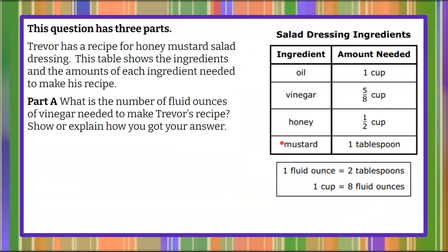Here's our math problem today. This question has three parts. Trevor has a recipe for honey mustard salad dressing. This table shows the ingredients and the amounts of each ingredient needed to make his recipe. Part A asks us: what is the number of fluid ounces of vinegar needed to make Trevor's recipe? We're going to show or explain how we get our answer. Use these conversion ratios, these ingredients, and answer the question.